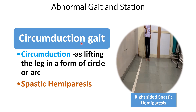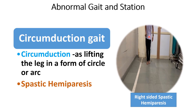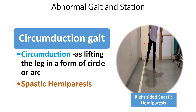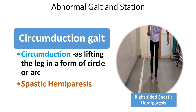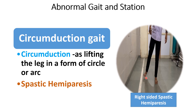Another abnormal gait is the circumduction gait — named because the child lifts the leg in the form of a circle or arc. It is seen in spastic hemiparesis. The child keeps the upper limb close to the body with flexed and adducted shoulder, wrist, and elbow joints, while the affected lower limb is stiff and extended. When the child lifts the affected limb, the hip is higher than the normal side, and the child drags the foot in a circumduction arc.